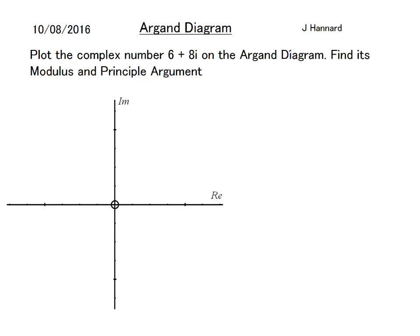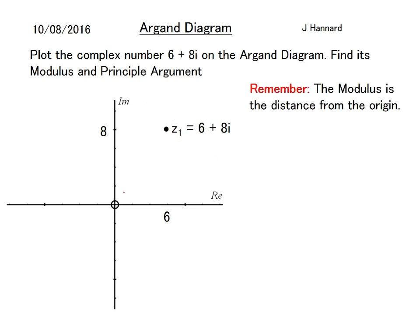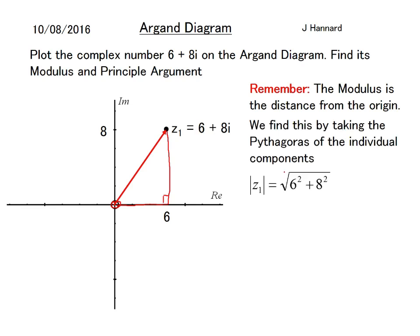Example one: plot the complex number 6 + 8i on the Argand diagram and find its modulus and principal argument. Just like an x and y coordinate, we simply plot it — there's 6 on the real axis, there's 8 on the imaginary axis, and we stick a dot at that point. We label it z₁ = 6 + 8i and draw a line from the origin. The modulus is the distance from the origin — we've created a right-angle triangle, and if you know your Pythagorean triples, you'll know that's going to be 10.